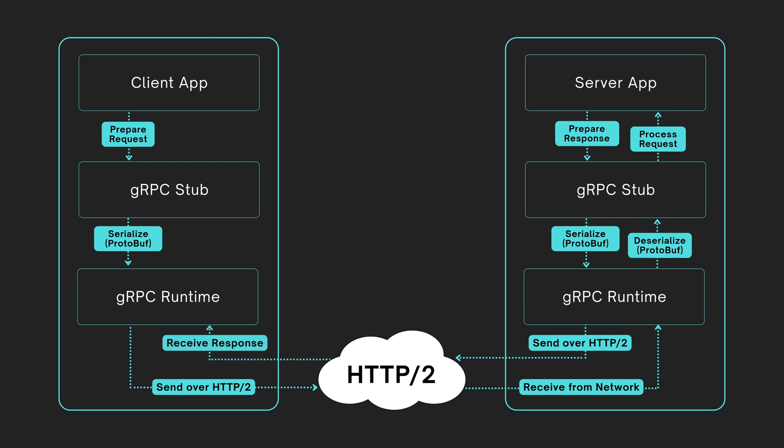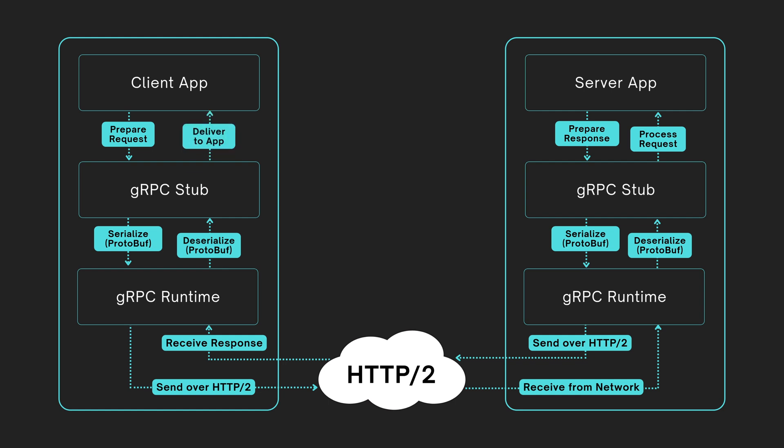gRPC transmits the encoded response back to the client over HTTP/2. The client runtime receives the incoming response, and the client stub deserializes the binary data into structured information. Finally, the response is delivered to the client application for use. This full round-trip from client to server and back is handled seamlessly by gRPC using protocol buffers over HTTP/2 under the hood.